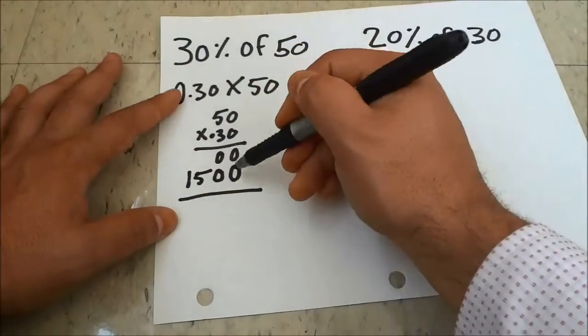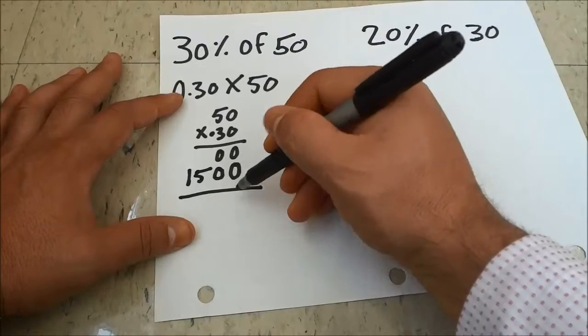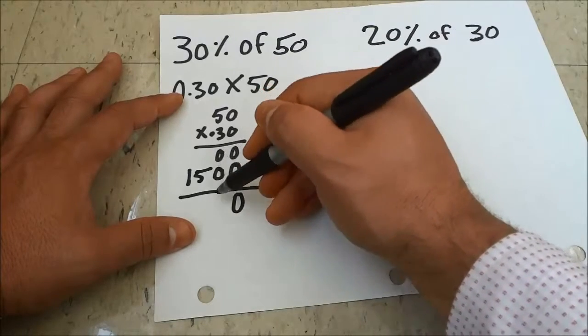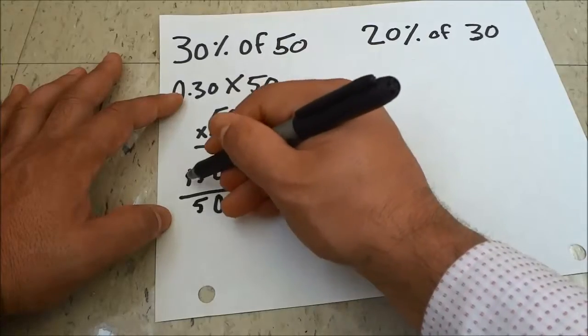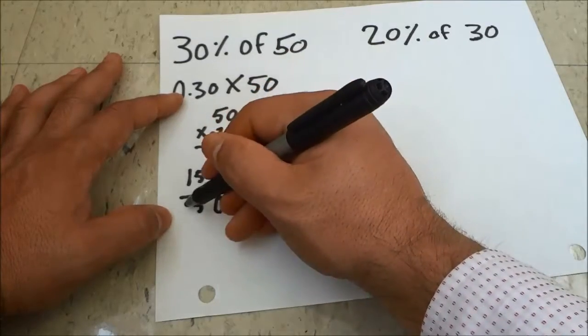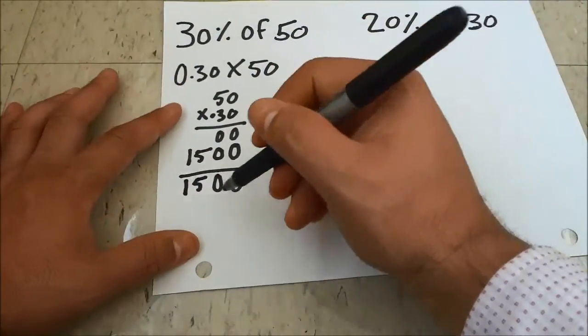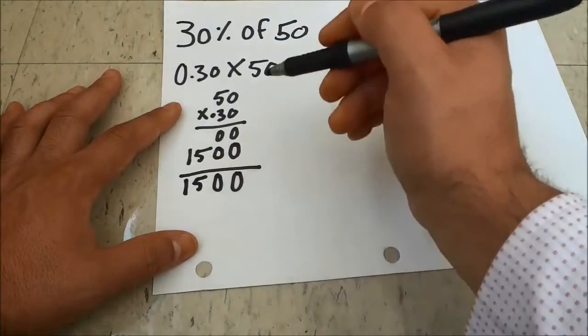Now I'm going to add these two numbers together. So 0 plus 0 is 0, 0 plus 0 is 0, 5 plus 0 is 5, and 1 plus 0 is 1. As you can see, I have 1500.